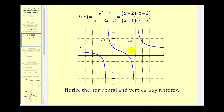One thing we should notice right away is that this graph has two vertical asymptotes, here at x equals negative one and here at x equals three. Vertical asymptotes are lines that the graph approaches but never touches. This graph also has a horizontal asymptote of y equals one. A horizontal asymptote is a line that a graph approaches but it may also cross it, as we see here. Since x equals negative one and x equals three would make the denominator equal to zero, we must exclude those two values from the domain.